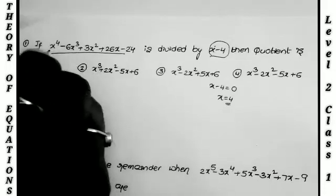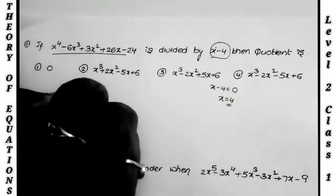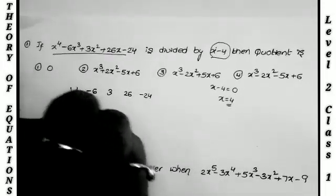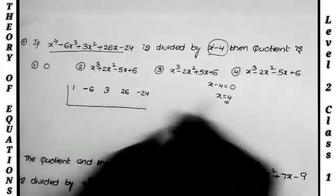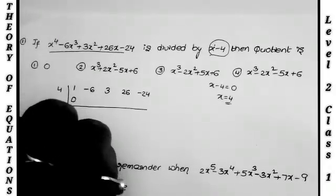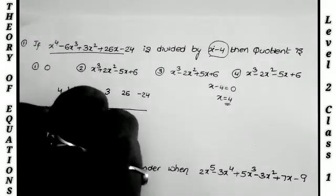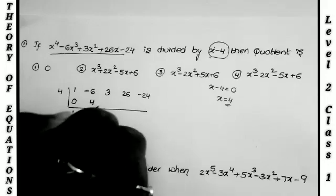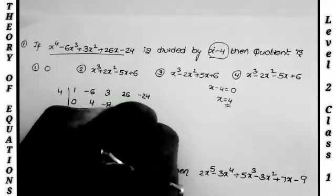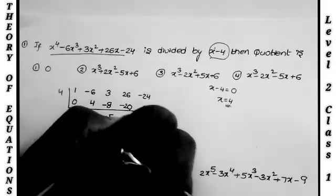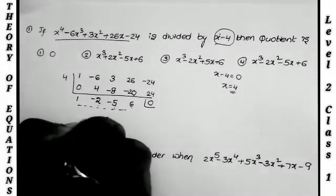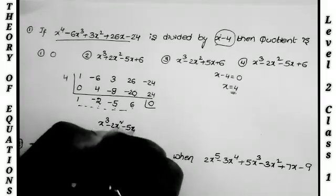To take the quotients from this equation: x⁴ quotient is 1, x³ quotient is minus 6, x² is 3, x quotient is 26, constant is 24. I take Horner division by 4. First, replace 0 here. 1 plus 0 is 1. 1 into 4 is 4. Minus 6 plus 4 is minus 2. 4 into minus 2 is minus 8. 3 minus 8 is minus 5. Minus 5 into 4 is minus 20. 26 minus 20 is 6. So this is the quotient value.